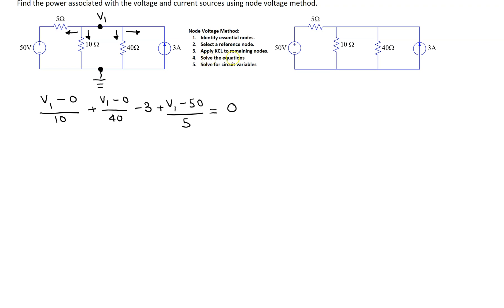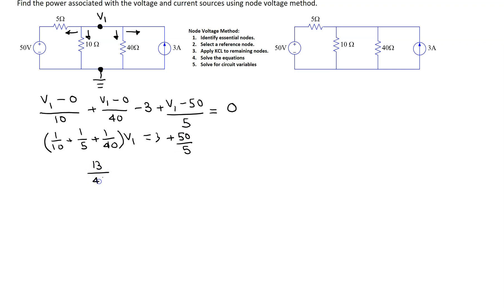Step 4 is solving this equation. This is a single equation with one unknown variable that we can solve by hand. Collecting the terms with V1 on one side, and moving the other terms to the other side gives 3 plus 50 over 5. Solving this, the node voltage V1 is 40 volts.